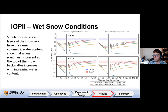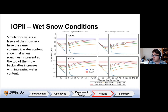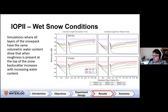Moving into wet snow conditions during IOP-2, with a little bit of wet snow on top of the ice, the dominant interface shifts to the top of the snowpack. The top layer of wet snow controls backscatter. As we increase volumetric water content across different roughness layers, we also see increases in backscatter — wetter snow yields more backscatter return, which also increases with roughness of that snow surface. We tested different correlation lengths as well. For VV polarized data the representation is fairly good; however, HH is underestimated by SMRT, which was a recurring theme.